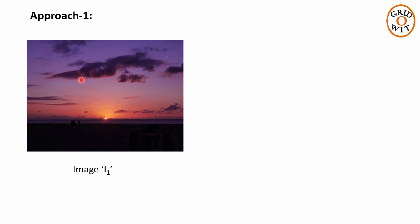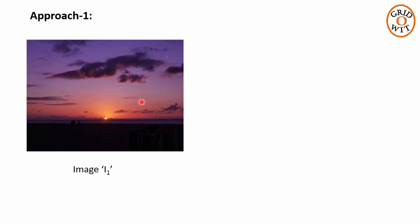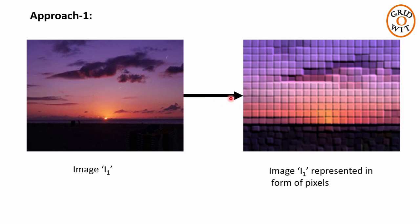Let us take an example. Here we have an image of sunset. And we all know that an image can be represented in the form of pixels. So this is the representation of this sunset image in the form of pixels.